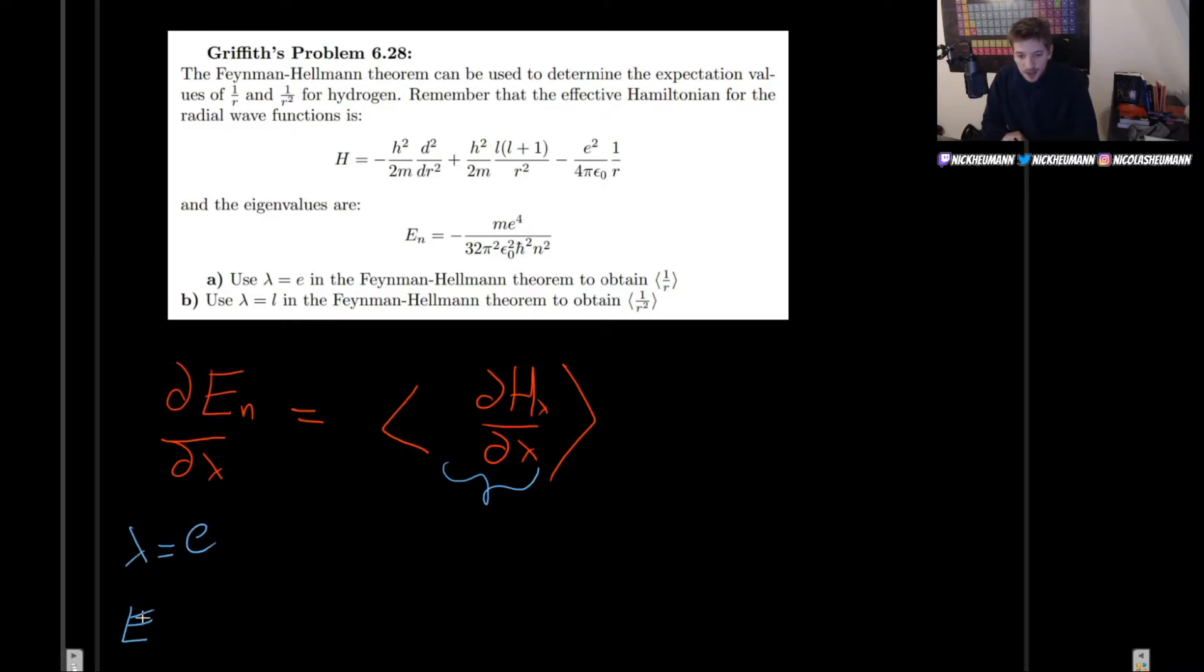Okay, so using lambda equal e. Well, the derivative with respect to lambda, which in this case, of course, is e. Well, what would that be? Well, we have to derive this with respect to e. So, we get minus 4 times m, but the 4 cancels out with 32. So, we get minus m e cubed divided by 8 pi squared epsilon 0 squared h bar squared n squared. All right, great.